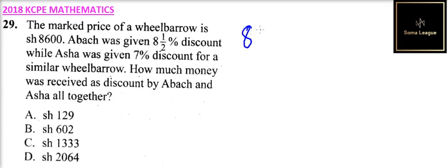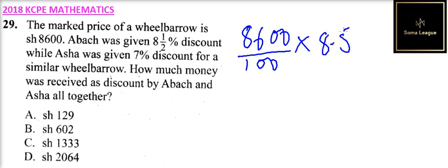So you say it is 8,600. You divide by 100 to get 1% and you multiply by 8.5. So you can divide by 100, you multiply 86 multiplied by 8.5. That should give you 731.